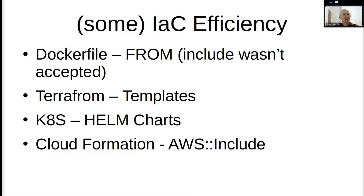If we talk about infrastructure as code, let's talk about some of the efficiency it brings us. For example, we have the FROM clause in Dockerfiles — so we can reuse base images. With Terraform, we have templates. With Kubernetes, we have Helm charts. With CloudFormation, we have the AWS include phrase. In all of these cases, we can reuse resources written by us previously, and in a lot of cases also resources written by others, not necessarily from our own organization. This raises the question of trust — when we use code from someone else, how do we make sure it's secure and safe?